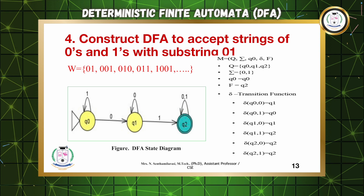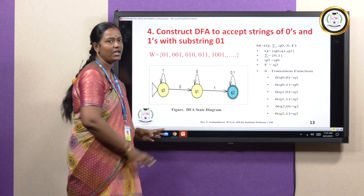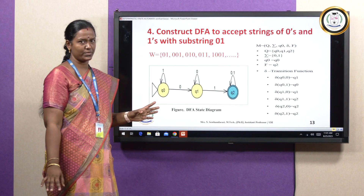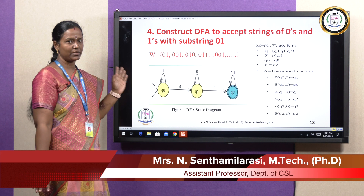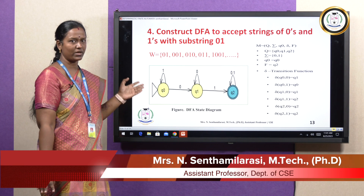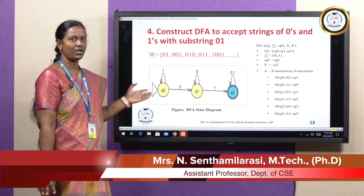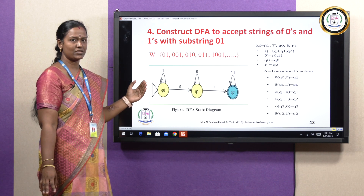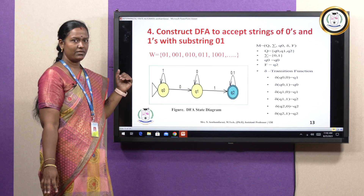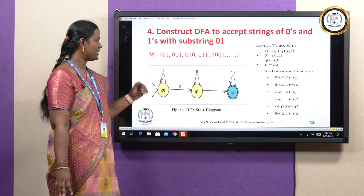We need to draw the transition diagram along with the five tuples. We covered the deterministic finite automata definition and how to construct a DFA. Thank you.